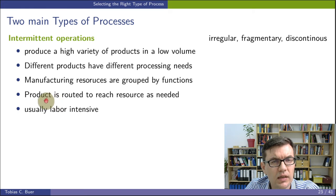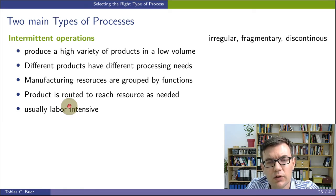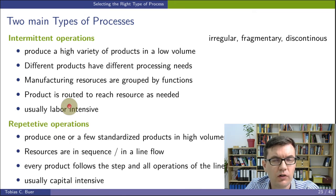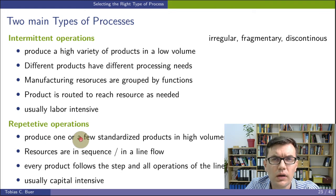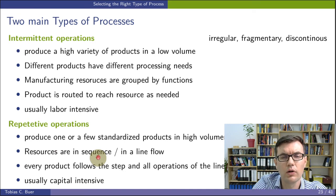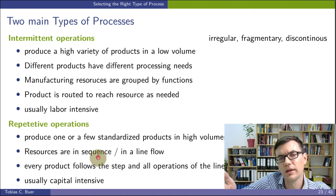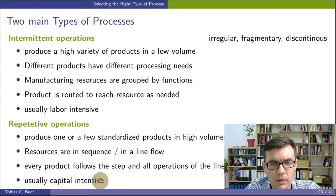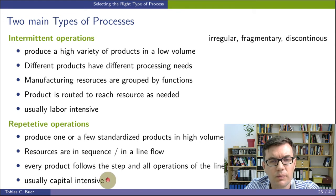Typically, intermittent operations are quite labor intensive because of the high customization, but they do not need too much capital as a rule of thumb. On the other end of the continuum we have repetitive operations. We use repetitive operations when we produce a few highly standardized products in high production quantity. We produce these in sequence in a flow line, so the product moves through the factory, visits all the machines in sequence, and some actions are performed. Every product follows the same production steps through all operations of the line. Typically this is more capital intensive but less labor intensive.